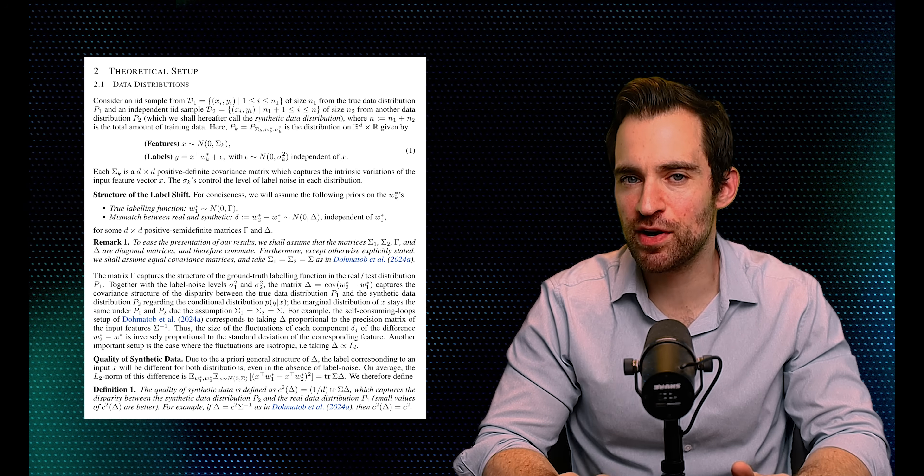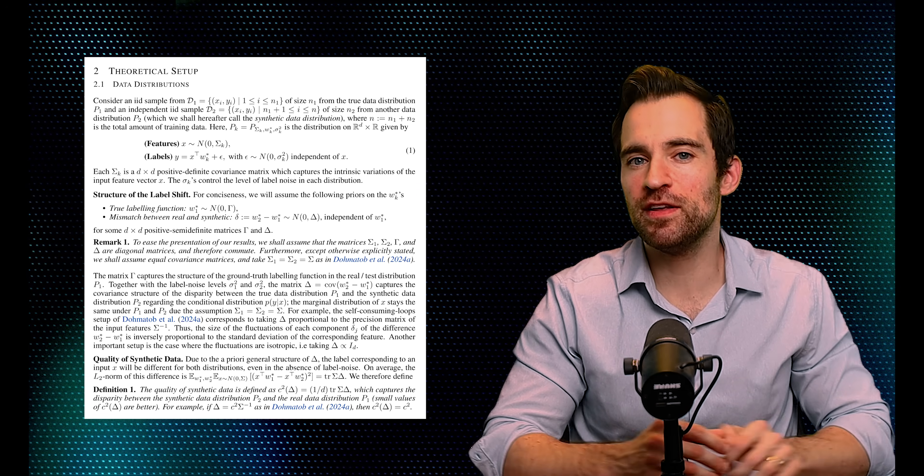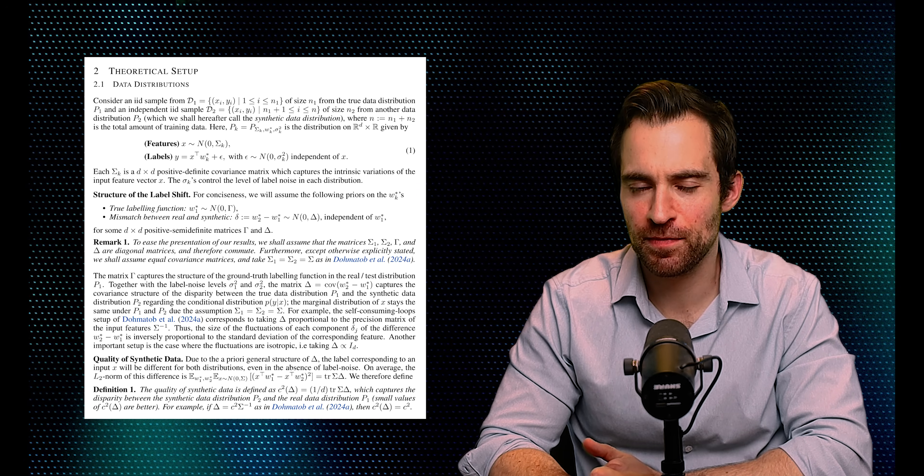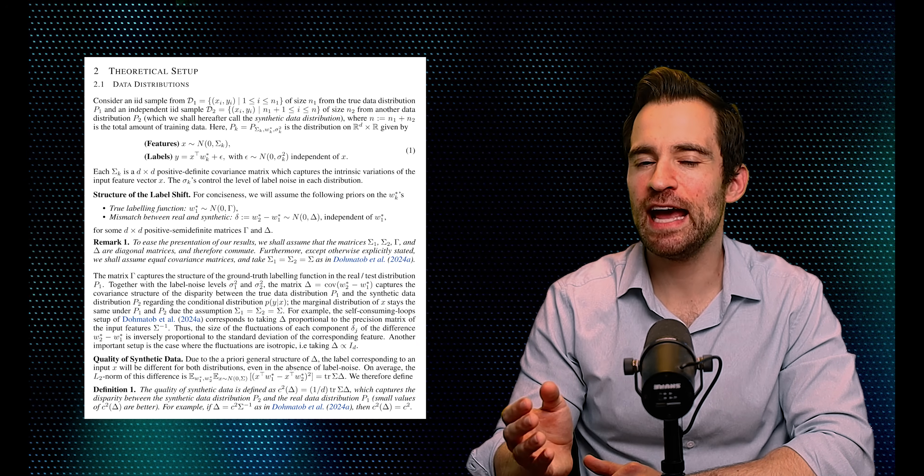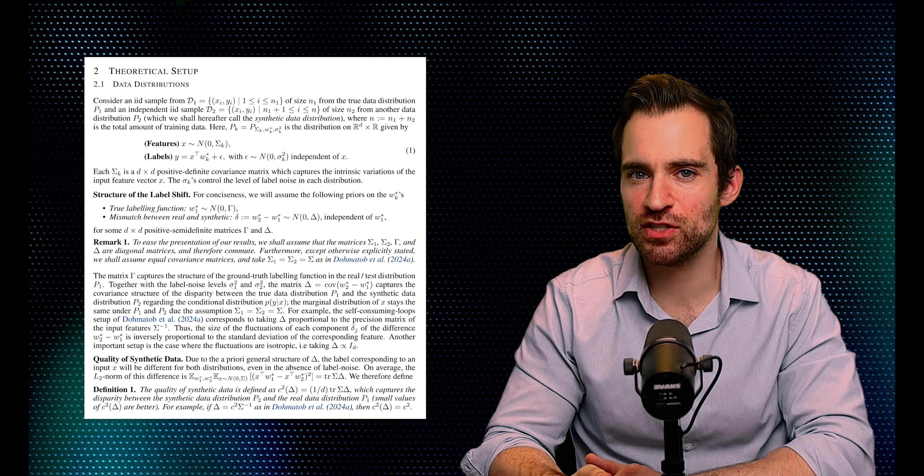Specifically, they assume two data generated processes. One is the real distribution, and the other is the synthetic distribution. They both use the mathematically friendly multivariate normal to generate features, and a linear function plus noise to generate targets.